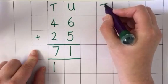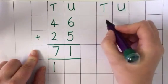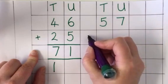I'll do another one for you. I'm going to put my tens and units at the top ready. This time I'm going to add 57 with 29.